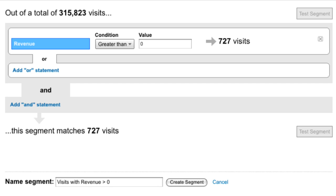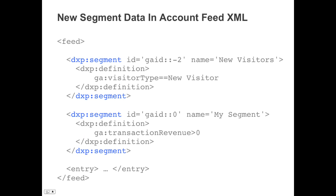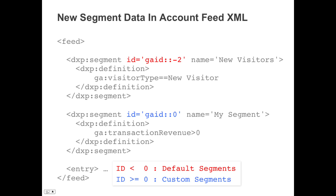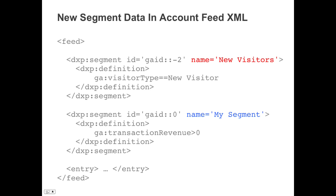Let's now look at how we can reference these segments through the API. Because all account configuration data is in the account feed, each default and custom segment definition is also found in the account feed. Here's an example of the account feed XML. Notice that segments are defined before the entry elements. The new segment elements have an ID attribute — the value of the ID is what is used to reference the segment in the data feed. Notice that all default segments have negative IDs, and all custom segments have IDs greater than or equal to zero. Each segment element also has its name as well as its definition. The Google Analytics API tries as hard as it can to translate the advanced segments from the web interface to a similar API expression. If the API can't translate the advanced segment, the value is left empty.